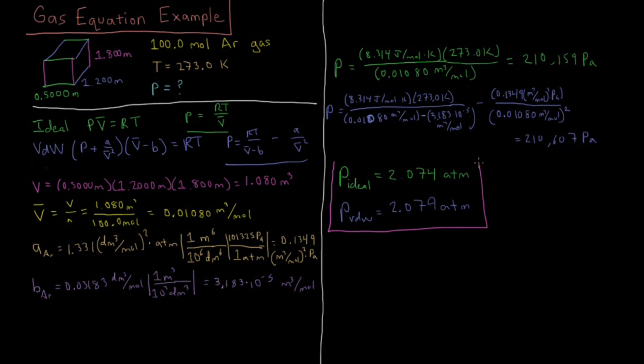Let's see how these compare. You'll notice they're very close to each other. We have only a difference of 0.005 atmospheres, about 0.2%, and that's because we're still fairly dilute. We're only a little bit more dense than typical atmospheric conditions. We're at a pretty standard temperature, 0 Celsius, and only a little bit more pressure than atmospheric, about twice that.